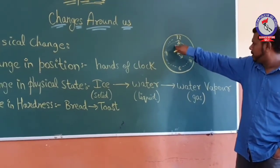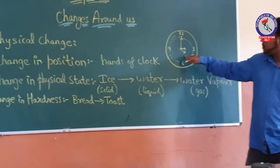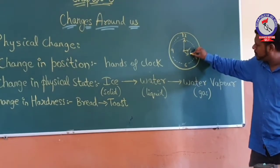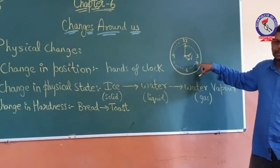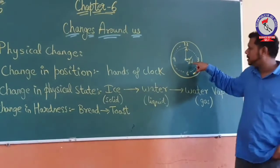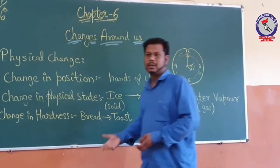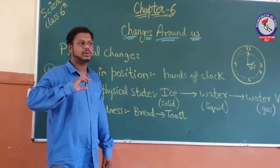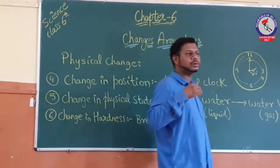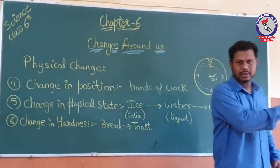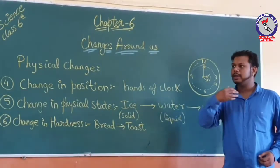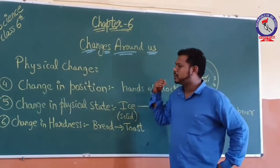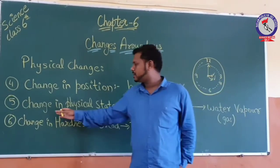The hour hand will move and come to 4, so it has changed its position. There are many objects around us that change position. The Earth also moves around the Sun, so it also changes position — summer-wise, winter-wise. This is the changing position example.